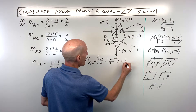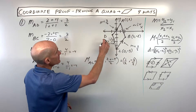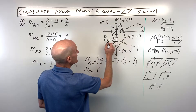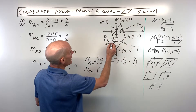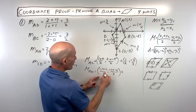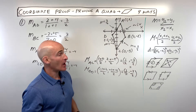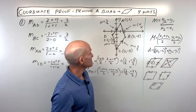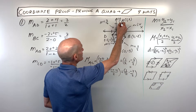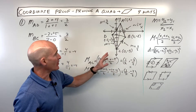That gives us one half and negative three over two. Now for the midpoint of BD: (negative 1 plus 2) over 2 and (negative 1 plus negative 2) over 2, which also gives us one half and negative three over two. They match, so the diagonals are bisecting each other — passing through each other's midpoints. That's method number two proving it's a parallelogram.